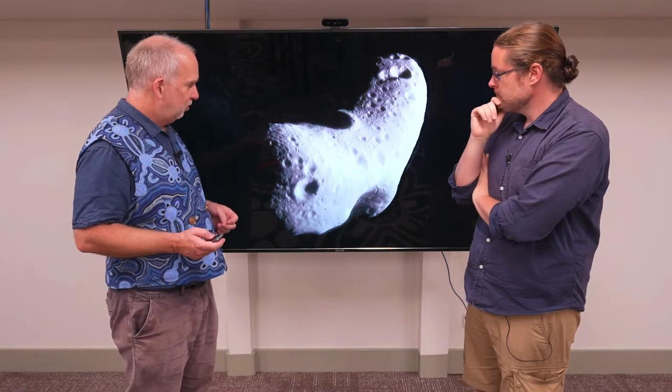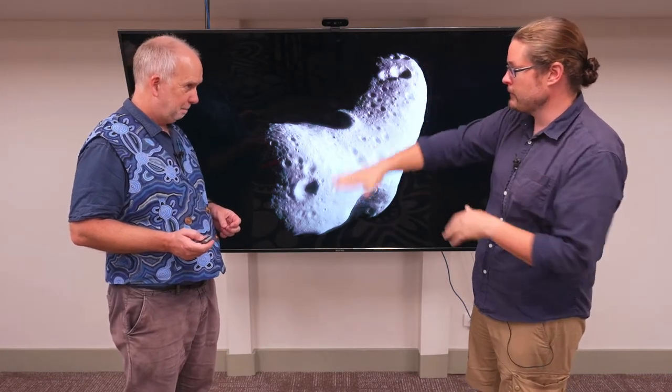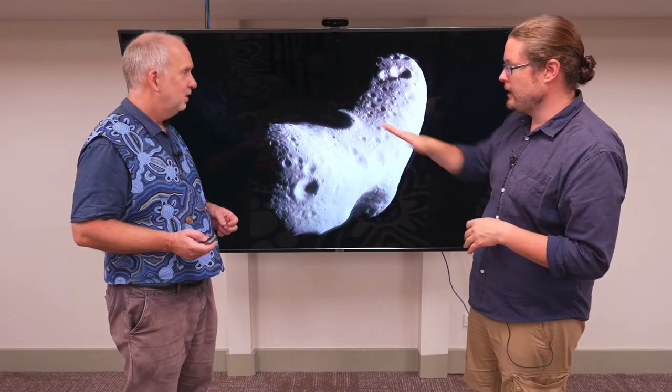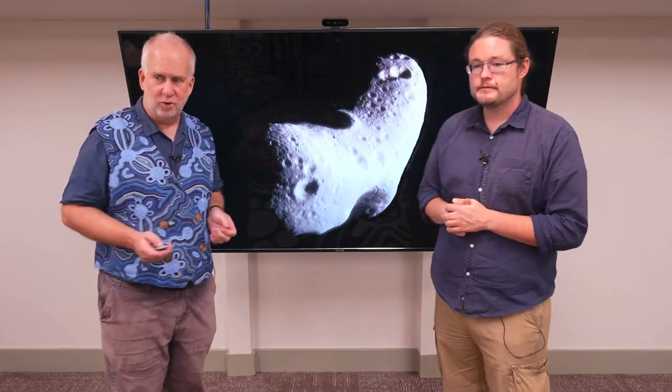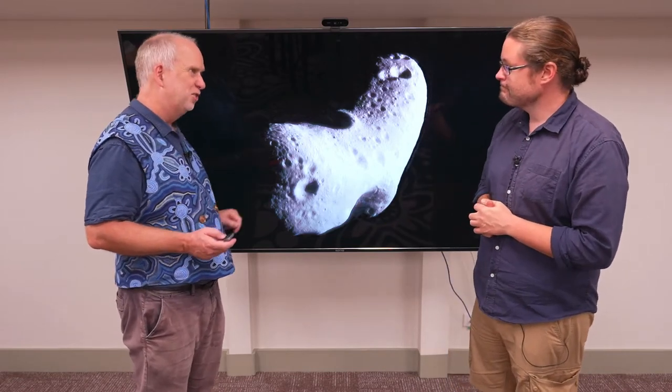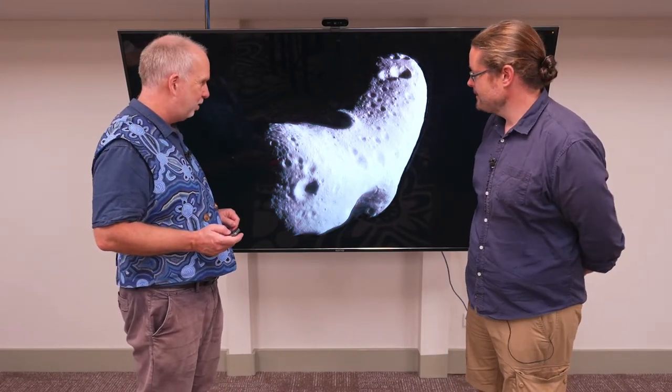Then we have the stony ones, S-types. That was the one that was very different, peaking towards the red infrared. Here's an example: this is 433 Eros, which has this sort of spectrum. Again, it's been visited by a spacecraft, so we've got a decent picture, unlike most of these things.